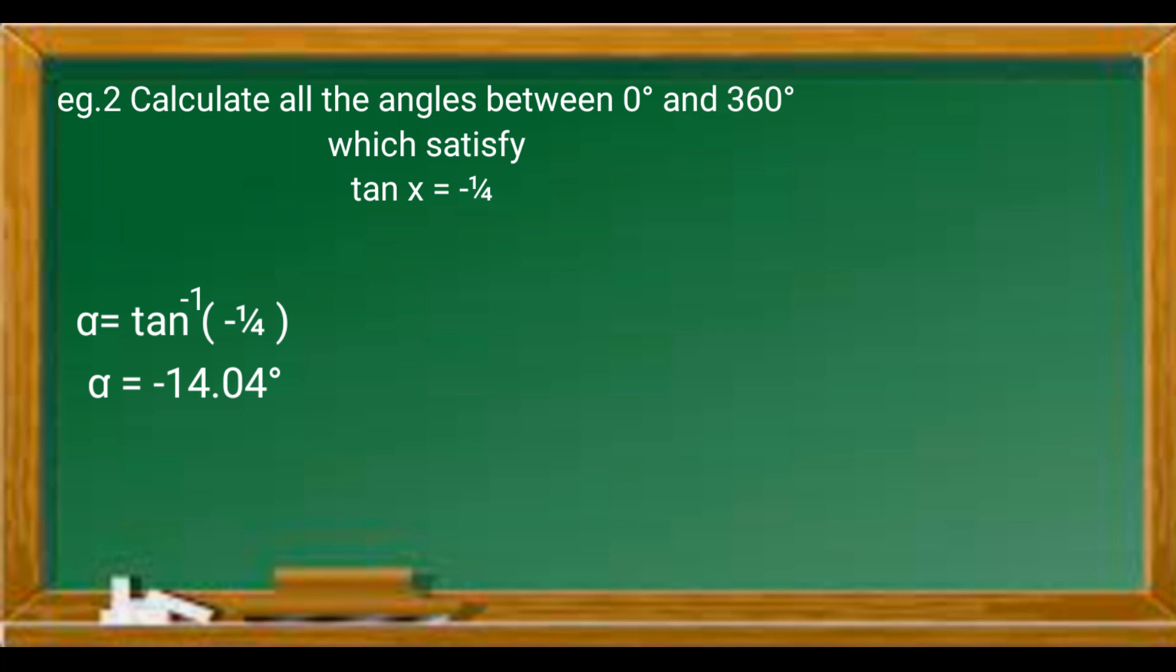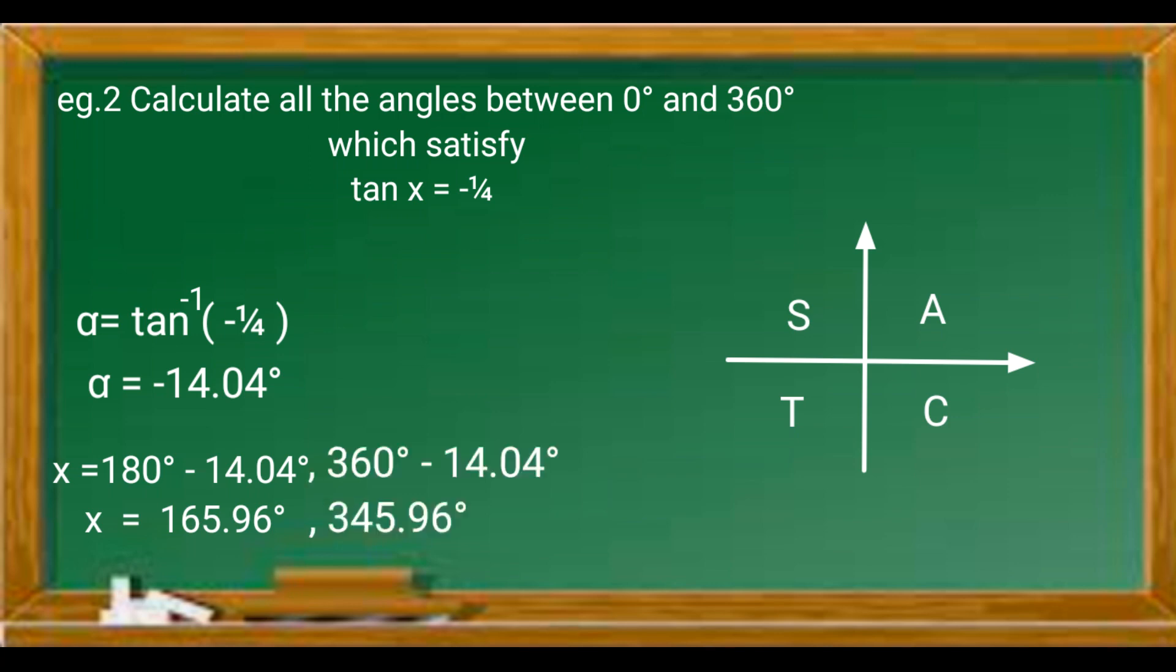So we use the absolute value of the reference angle. Tan is negative in the second quadrant and the fourth quadrant. So the second quadrant will be 180 subtract the reference angle 14.04, which is equal to 165.96. And the fourth quadrant, which is 360 subtract 14.04, will give us 345.96 degrees.